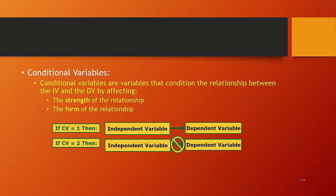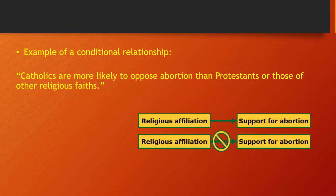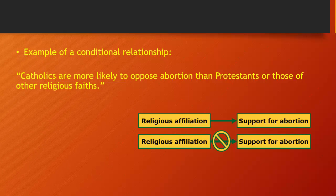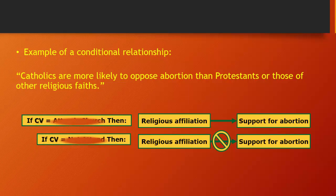All right, let's take a look at an example of a conditional relationship. Catholics are more likely to oppose abortion than are Protestants or those of other religious faiths. Now, that's a good hypothesis, but then if you think about a conditional relationship, you need to think about, is it possible that this religious affiliation predicts how much someone supports abortion under some circumstances, but doesn't under other circumstances? And the example that we've come up with here is possibly church attendance. Perhaps the relationship holds amongst those who attend church, but does not hold amongst those who do not attend church.